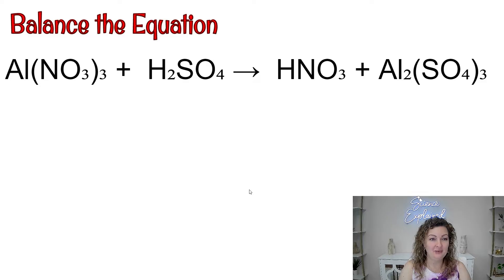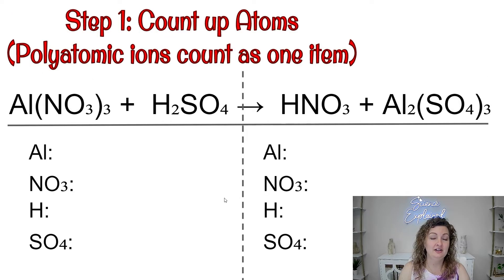So here we have a chemical equation. The first thing you need to do is figure out is it balanced already or is it unbalanced? Do we even need to waste our time? So we need to go ahead and count up our atoms and that is step one.